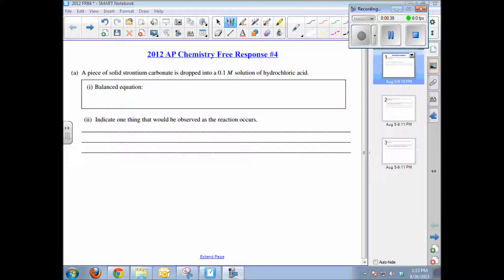The first one: a solid piece of strontium carbonate is dropped into a 0.1 molar hydrochloric acid solution. So we're starting with solid strontium carbonate. You need to be able to figure out the chemical formula for strontium carbonate shown here.